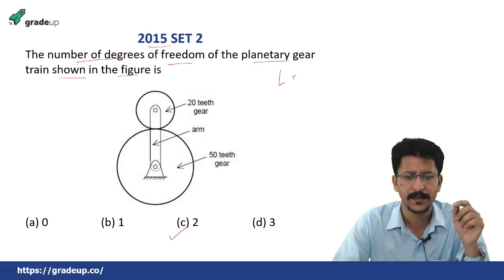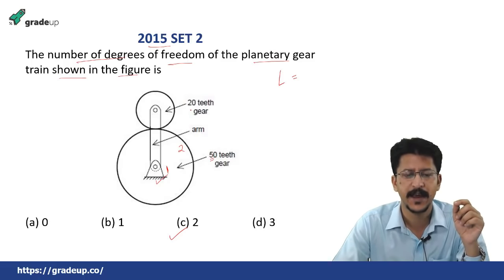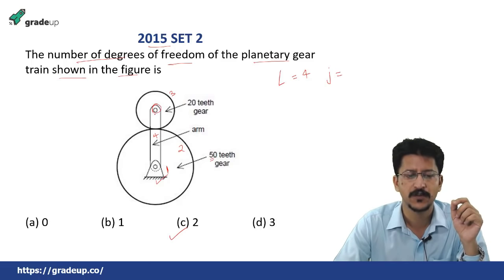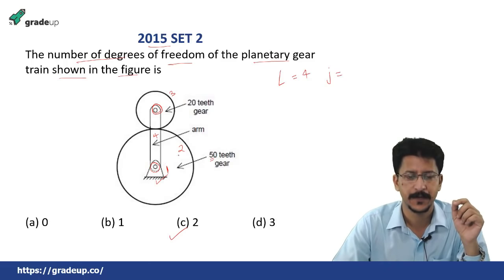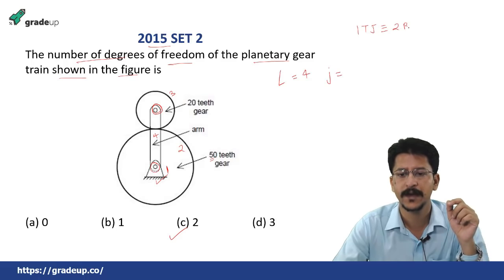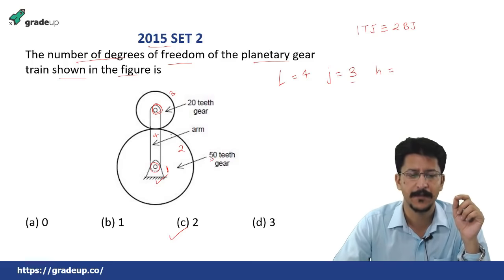In this case the number of links are equal to: there is one fixed link, link number 1. The gear having 50 teeth is link number 2, the gear having 20 teeth is link number 3, and this arm is link number 4. About the binary joints: here we have one binary joint between this arm and link 3, so that is 1, and here at this point we have a ternary joint between links 1, 2 and 4.